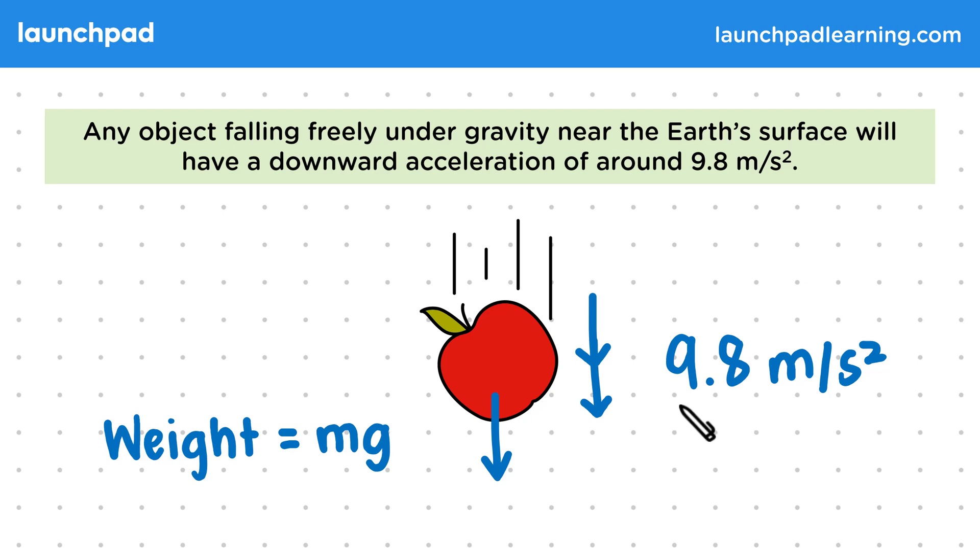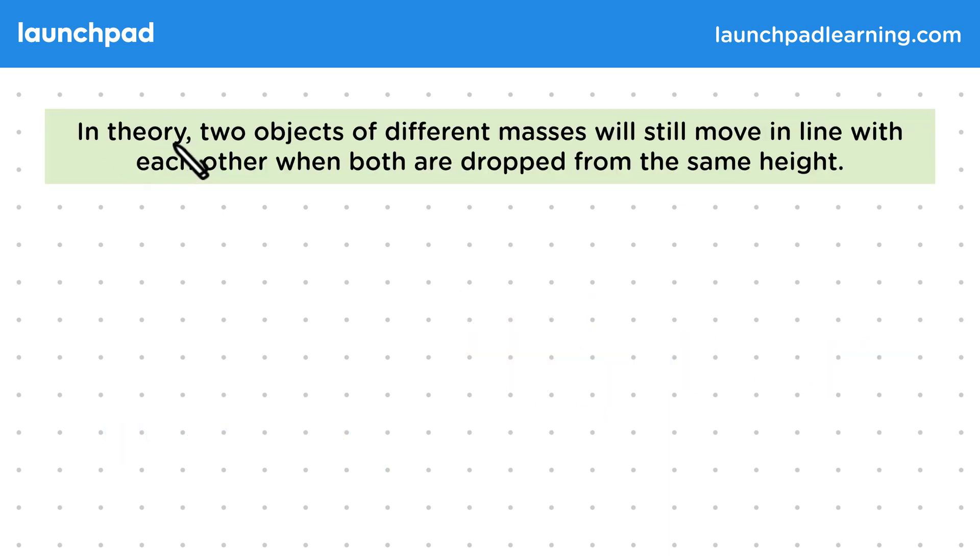But do all free falling objects really have this same acceleration? How exactly can we show this? In theory, two objects of different masses will still move in line with each other when both are dropped from the same height.